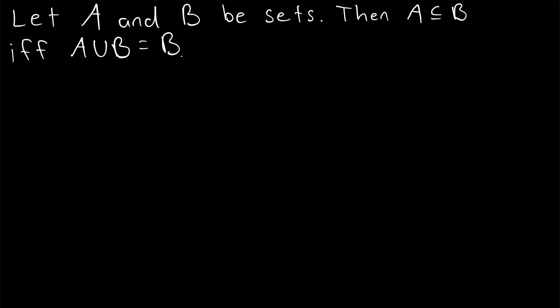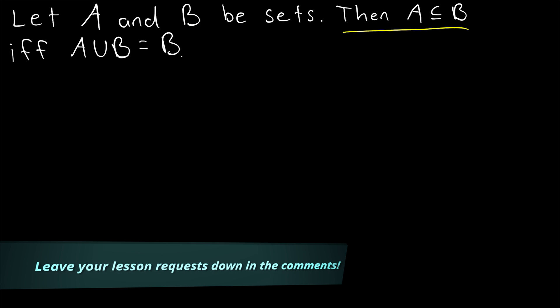Let A and B be two sets. Then, A is a subset of B if and only if A union B is equal to B.